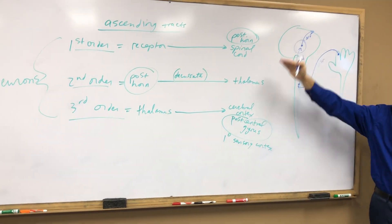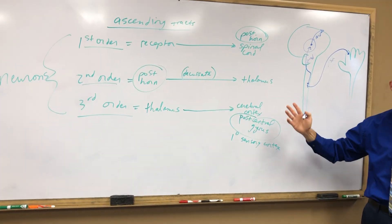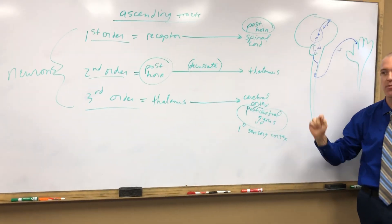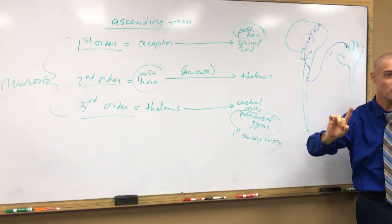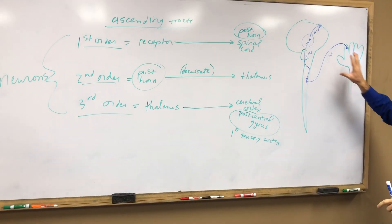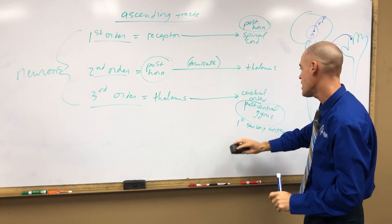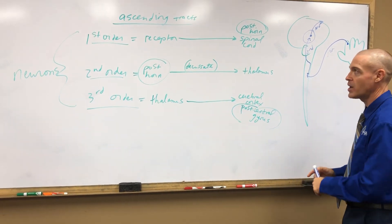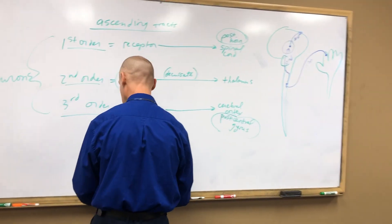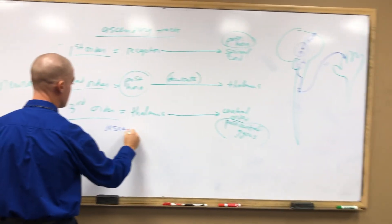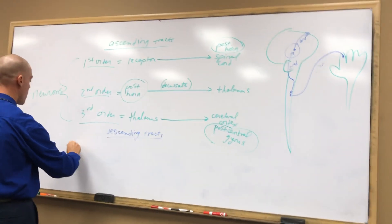So we just traced the entire sensory pathway. We've got to keep going — we've got to do motor real fast. We're going to do motor. I'll leave the sensory pathway up so we can review it. Our motor pathway will be in blue, and it's going to be referred to as the descending tracts.